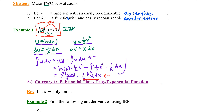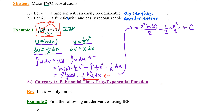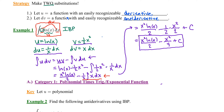Let's work this integral. We have x squared natural log of x over two — that term is finished, no integral required. Then we have constant coefficient negative one-half, and we integrate x with the power rule. Simplifying, we arrive at: x squared natural log of x divided by two, minus x squared over four, plus C. We have successfully integrated that stubborn original integrand.